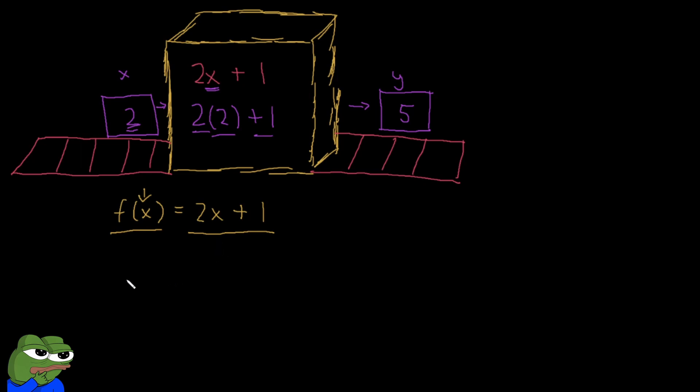In our example earlier, we said that f, which is the same machine, took in 2 as an input. So this was our X box, right? And this outputted 2 times 2 plus 1, where we replaced X with 2. Okay. And this became 5.